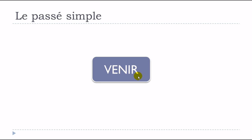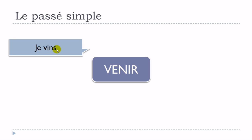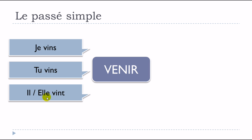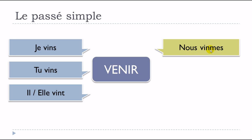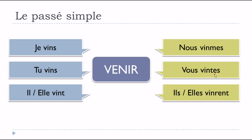Now VENIR — to come — remember it's a bit tricky. VENIR and all composed verbs formed with it: je vins, tu vins, il vint, elle vint, nous vînmes, vous vîntes, ils vinrent, elles vinrent.